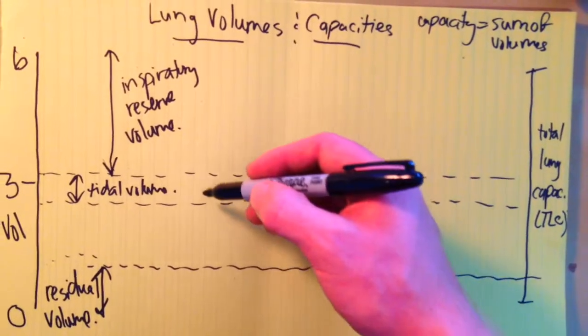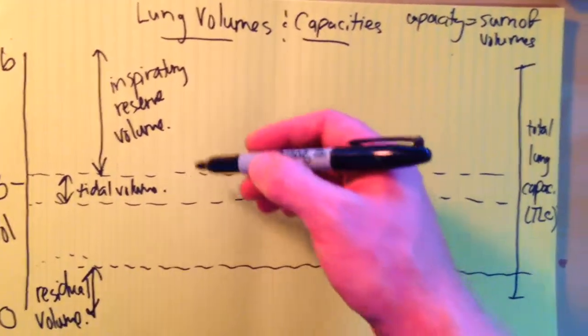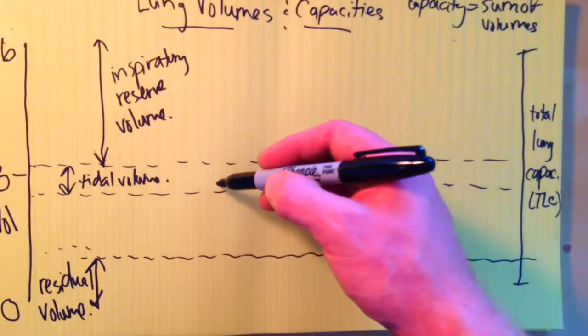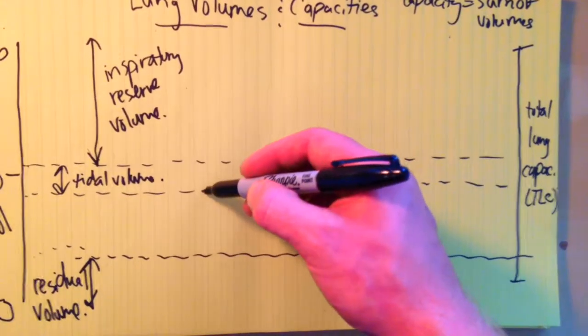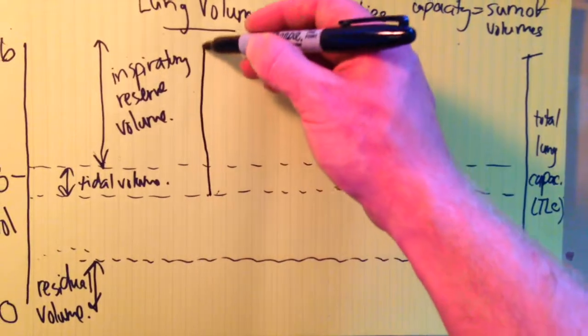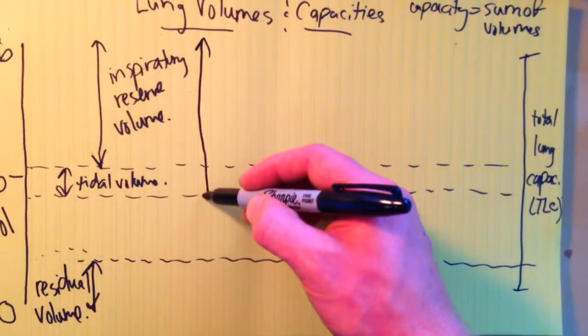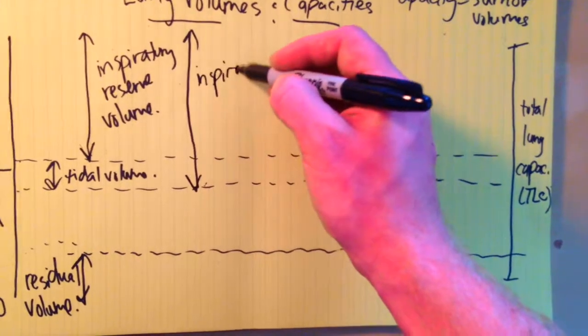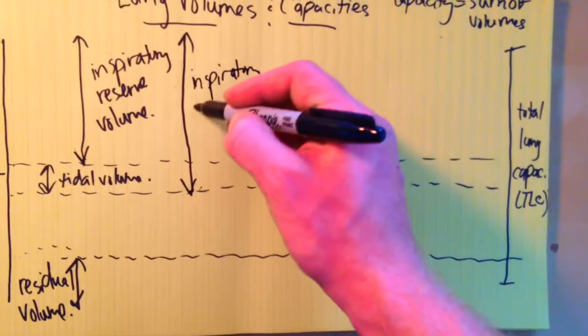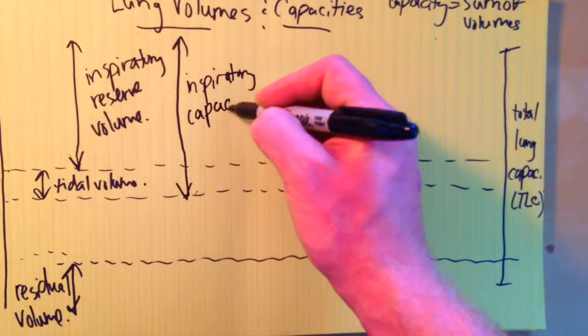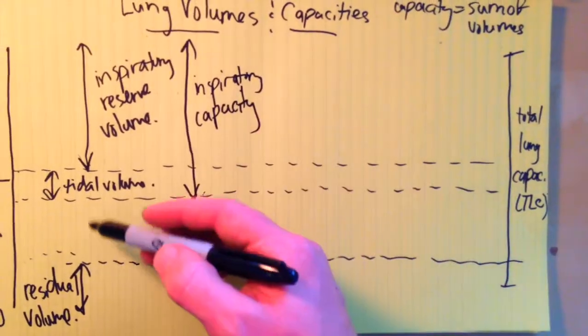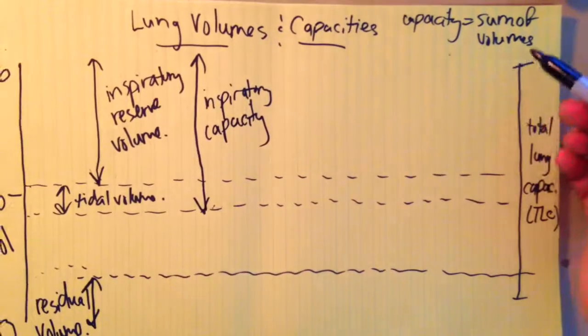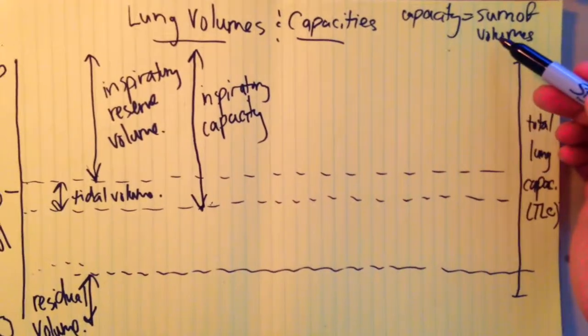But if we think about when you breathe in at the end of a passive breath, you breathe in deep from the end of expiration, you're going to be breathing in from down here all the way up to your total lung capacity. So this is your inspiratory capacity, which we can see is made up of the tidal volume and the inspiratory reserve volume. So we can see that the capacity is the sum of the volumes.